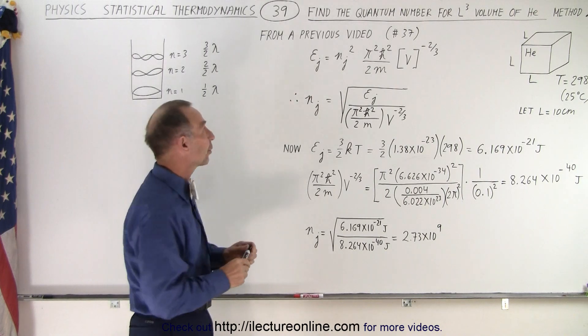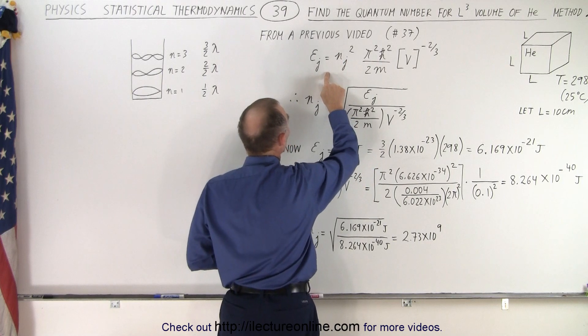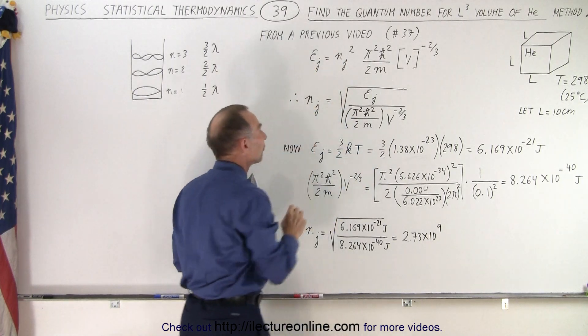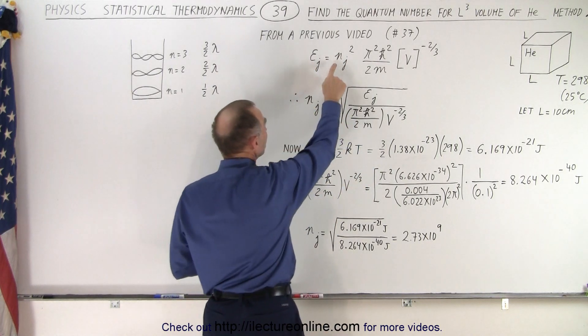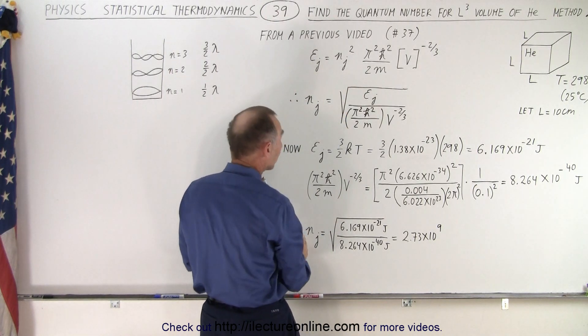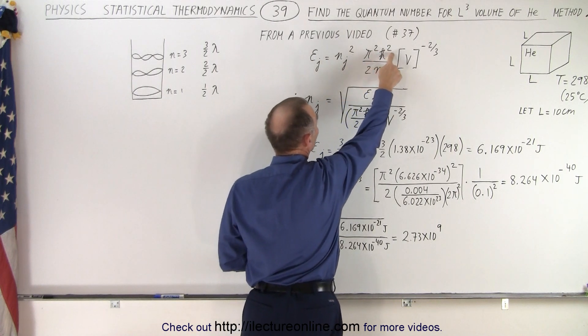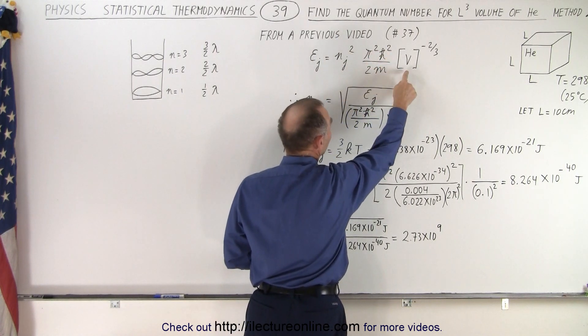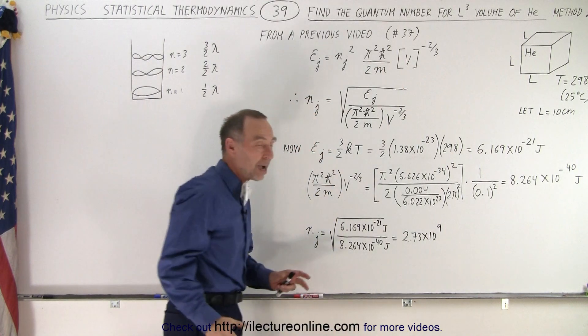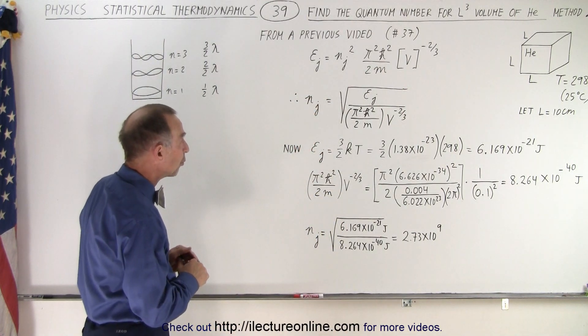So what we're going to do here is use the result we got from video number 37, where the quantum energy of a particle is equal to the quantum number squared times pi squared h-bar squared divided by 2m times the volume to the negative 2/3 power. So you go back to that video and, that's the equation we derived.